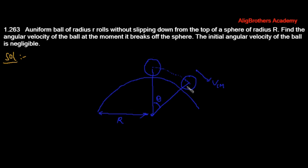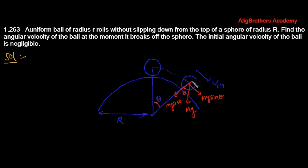Looking at the free body diagram of the ball: since the ball is losing contact at this instant, the component of mg provides the centripetal force. This component is mg cosθ because this angle is θ, and the second component is mg sinθ. The normal force by the bigger sphere is zero at this instant since the ball is losing contact. Up to this instant, motion of the ball is circular, so only the component of mg provides the centripetal force.